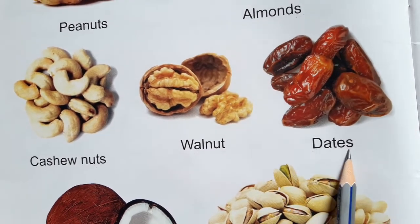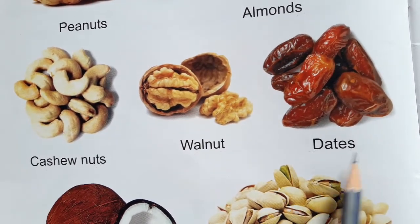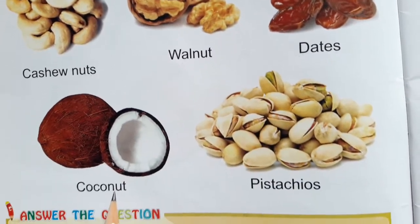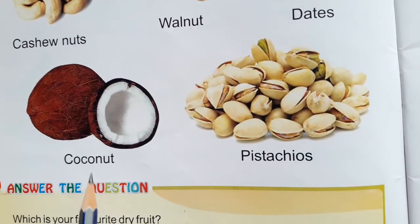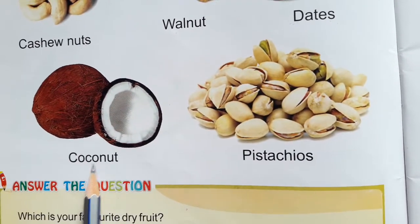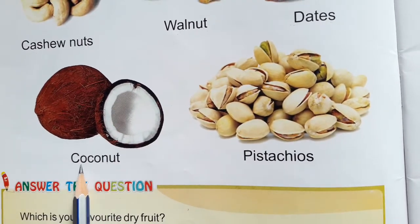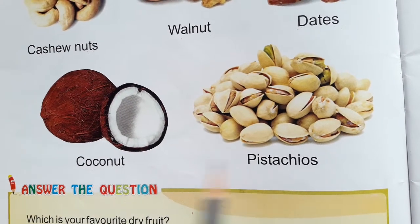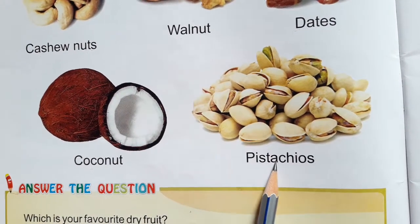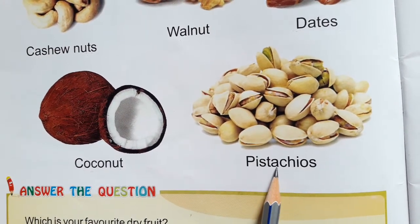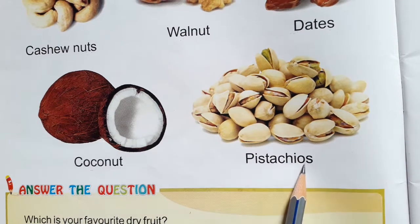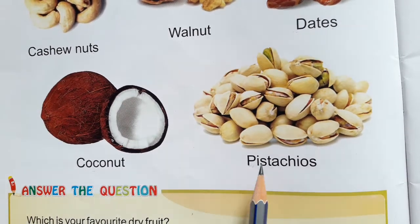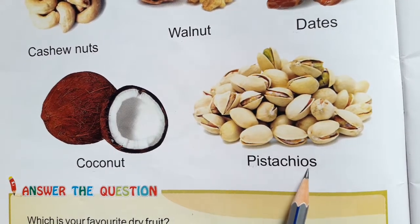Dates, Dates. Name of this dry fruit is Coconut, Coconut. Name of this dry fruit is Pistachios, Pistachios.